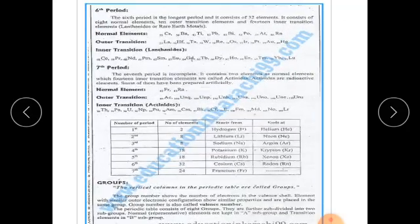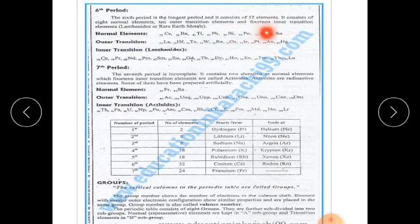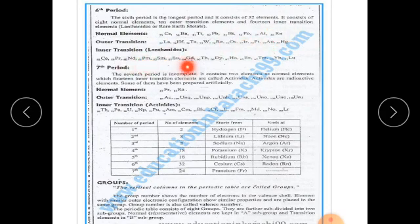The 6th period is the longest period and consists of 8 normal elements, 10 transition elements, and 14 inner transition elements, which are the lanthanides (also called rare earth metals). The 7th period is incomplete — it contains 2 normal elements and 14 inner transition elements called actinides, which are radioactive. Some of them have been prepared artificially.